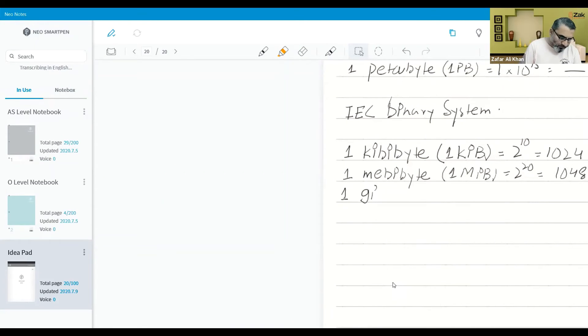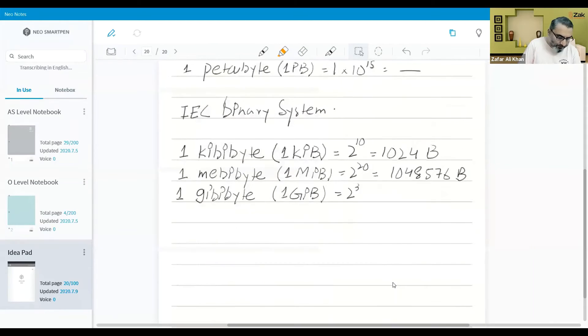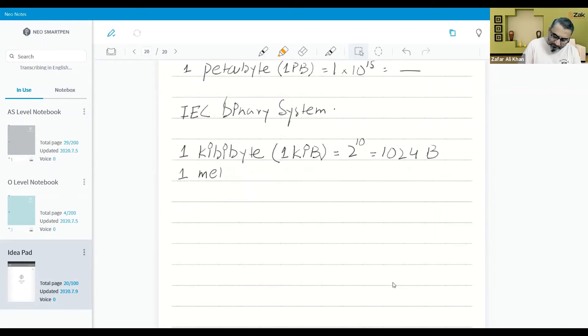Then we have got one gibibyte, G-I-B-I-byte. That would be one GiB, that is 2 to the power 30. That would become 1,073,741,824 bytes. I would not write anymore these size of bytes, you may calculate it on your own. One tebibyte, T-E-B-I-B-Y-T-E, that is 2 to the power 40.